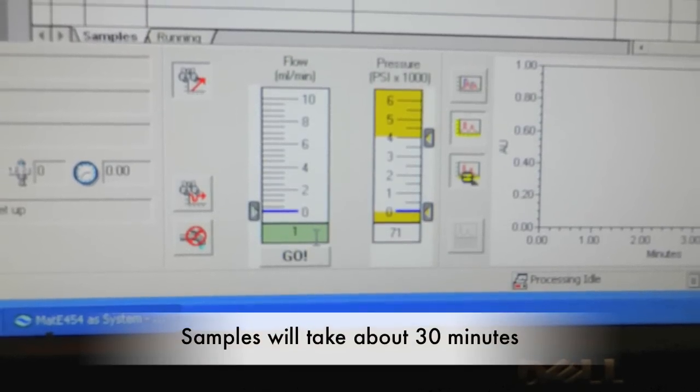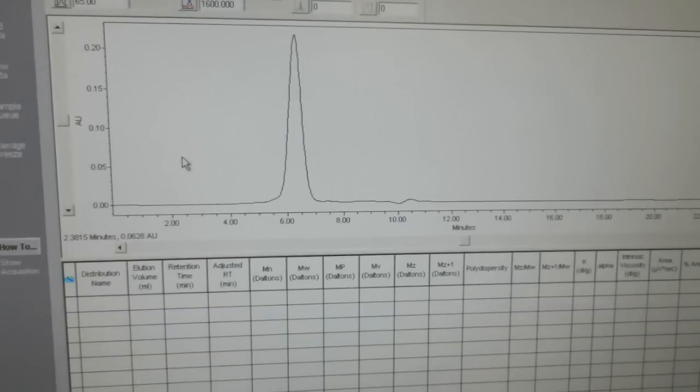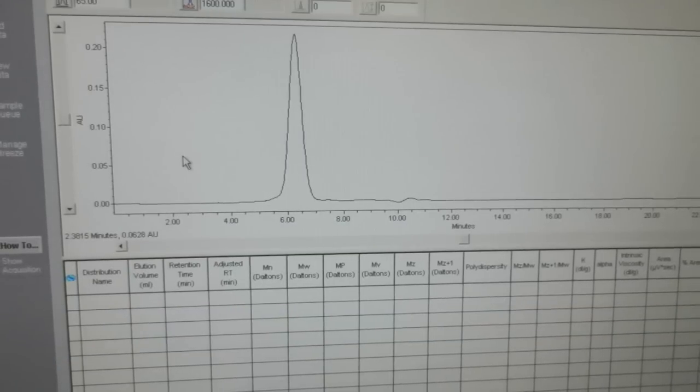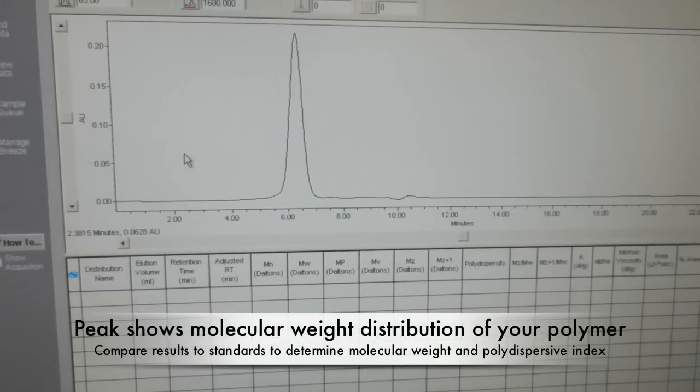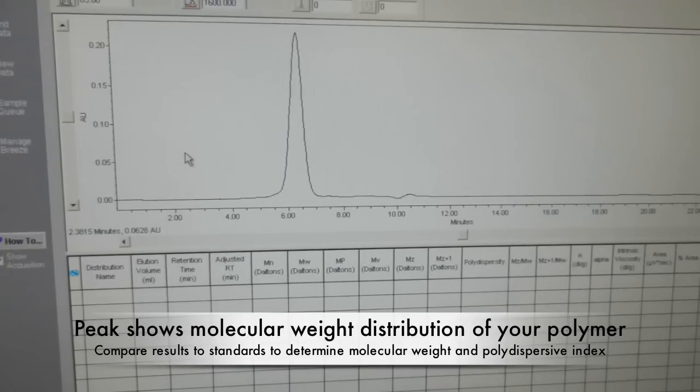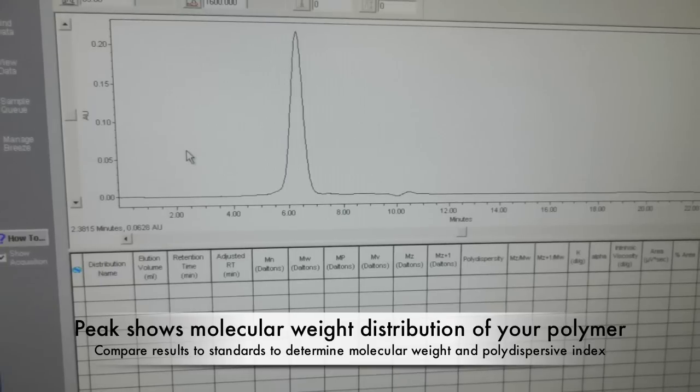It will usually take 30 minutes to complete the analysis of your polymer, and a graph will be shown at the bottom of the screen. Your graph will show a peak that describes the molecular weight distribution of your polymer. By comparing the running time with the standard provided, one can determine the number and weight average molecular weight, along with the PDI or polydispersity index.